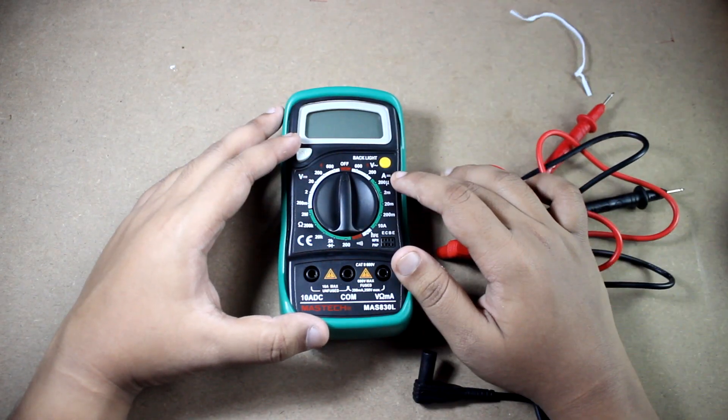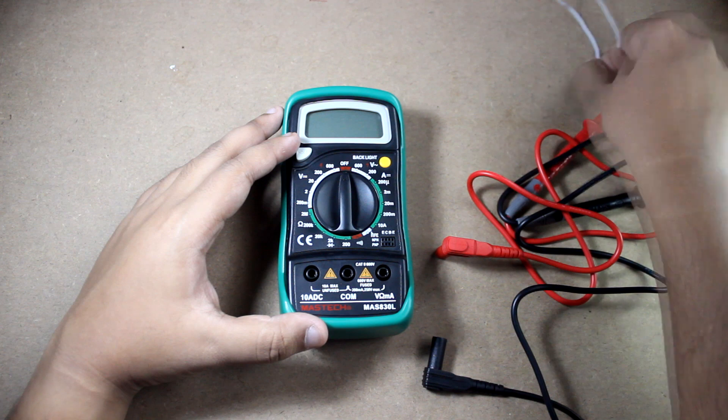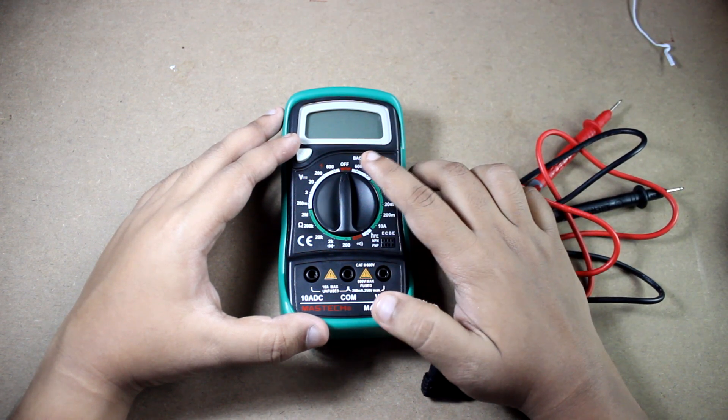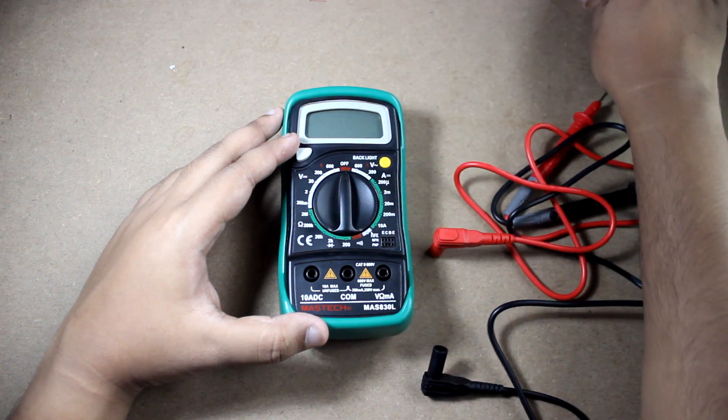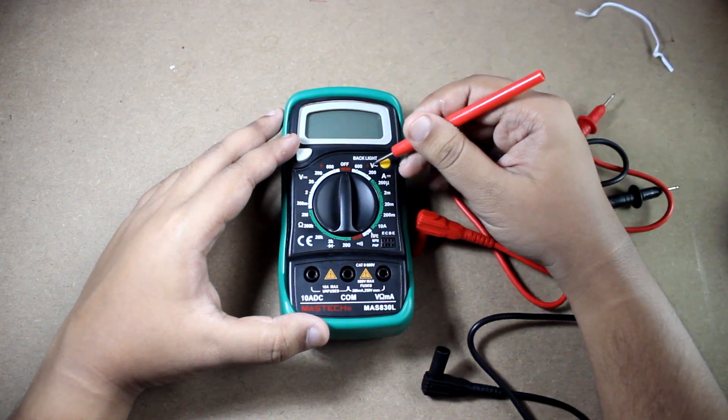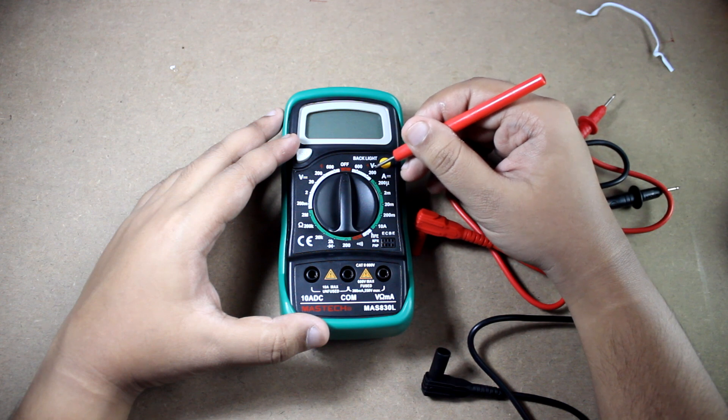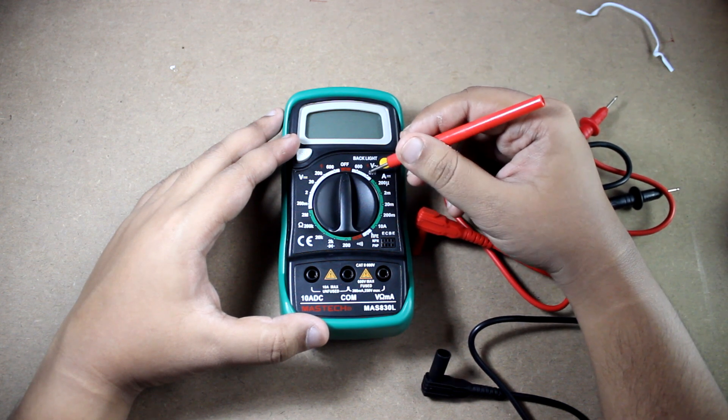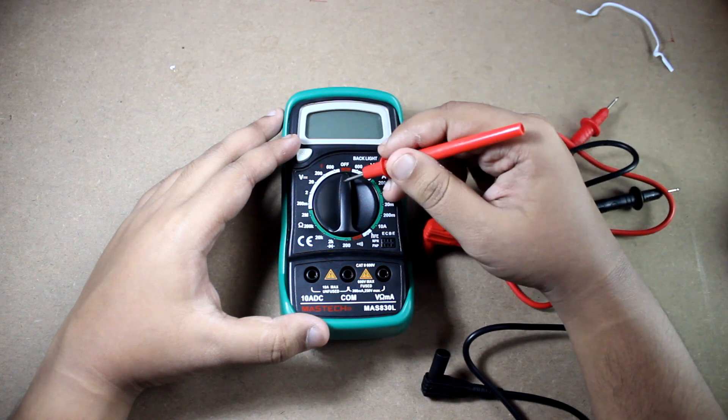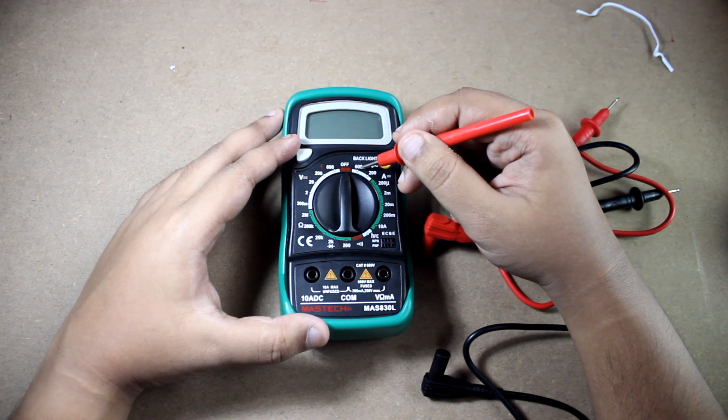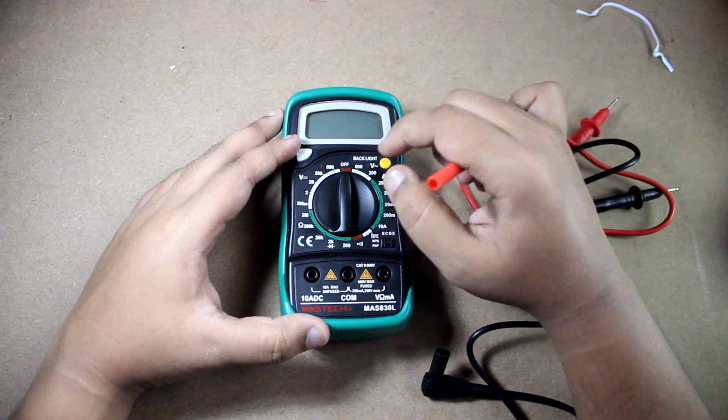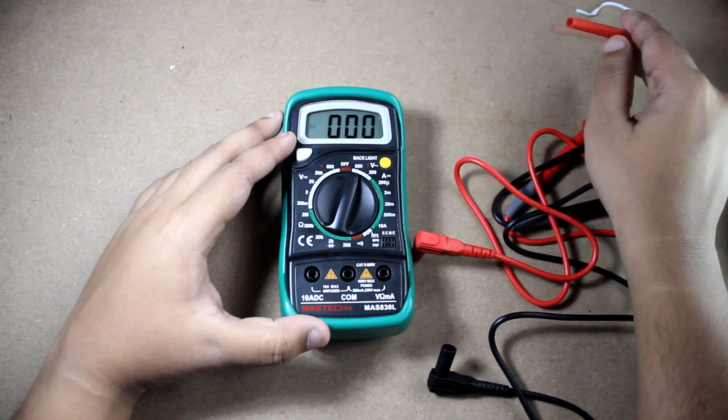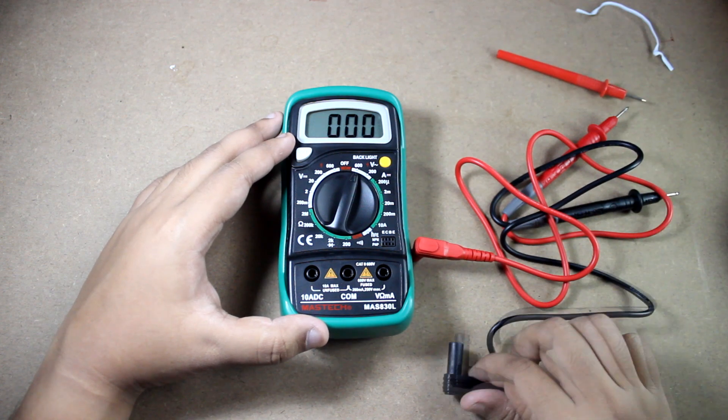First of all, put the rotary switch to this range. This V and this AC sign will denote that this portion is for AC voltage measurement. Put this rotary switch at the highest reading, that is 600 volt AC. This was the first step.